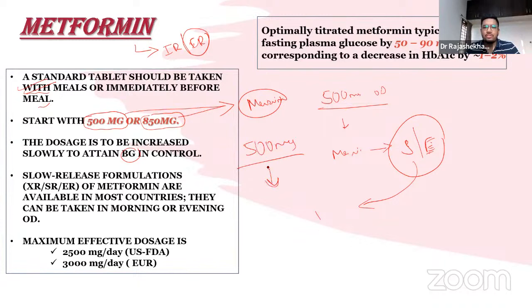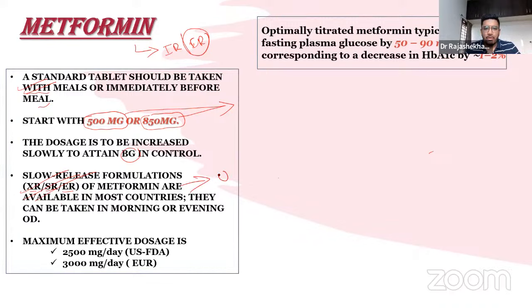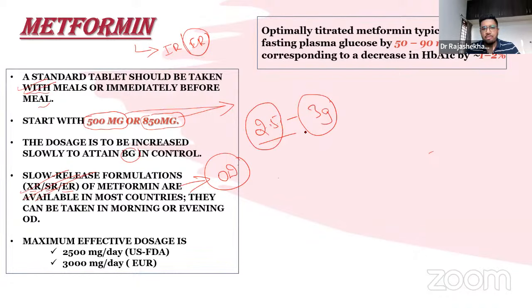Many patients are kept at 500 mg of metformin indefinitely, which is wrong practice. You must titrate to the optimal dosage. The maximum dose approved by European countries is up to 3 g; the FDA approves up to 2.5 g. XR, SR, and ER formulations are equivalent and can be given once daily, in the evening or morning.